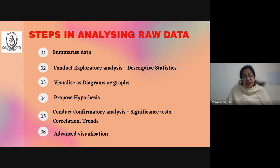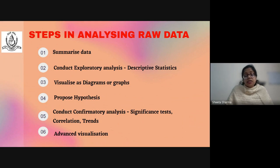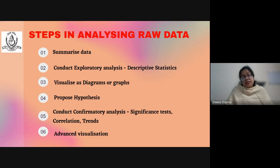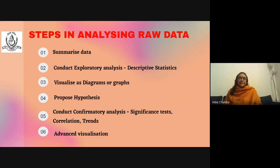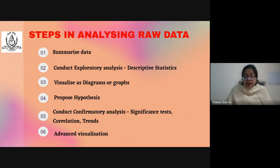The second step is to conduct exploratory analysis, which includes calculations of various statistical measures involved in descriptive statistics. The third step is to visualize the data in the form of diagrams or graphs. The fourth step is to propose a hypothesis based on your problem statement. The fifth step includes confirmatory analysis such as significance testing, correlations, or regression calculations. Finally, depending on the results obtained, inferences can be drawn, which can be followed by advanced visualization such as heat maps.